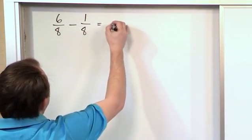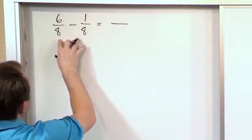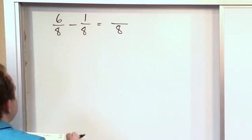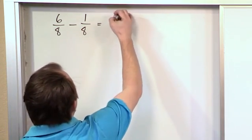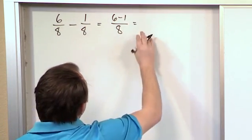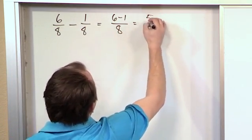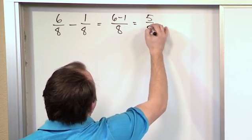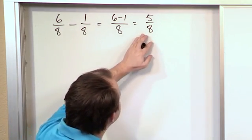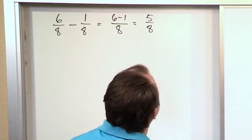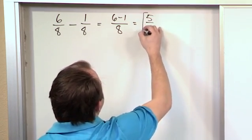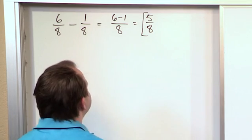Since we have a common denominator already, you just carry it along for the ride. And then on the top, you just subtract the numerators: 6 minus 1. So what you get here is 5 eighths. Then you look at this and say, can I simplify this anymore? You're not able to simplify it further because you cannot divide the top or bottom by anything to simplify it. So that is the final answer.